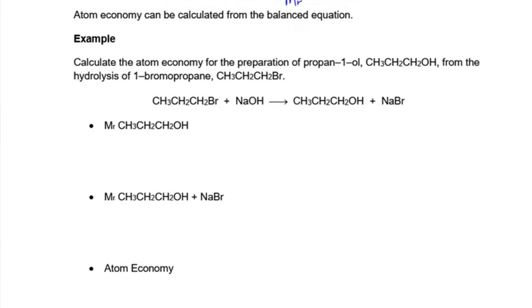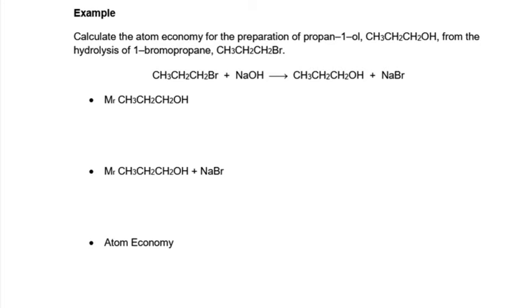So all you need for this is the balanced equation. So what you need to do is use your balanced equation and add up the MRs. It's asking us to add up the MRs of the product we want because we're trying to work out what the atom economy in the preparation of propan-1-ol is. So add up propan-1-ol. Pause the video and add up the MR of propan-1-ol and the MR of all the products.